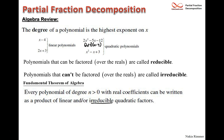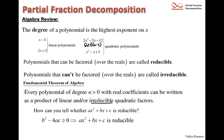The real question is: how do you know whether a quadratic polynomial is reducible or irreducible? For ax² + bx + c, the quadratic formula has b² - 4ac under the square root. When b² - 4ac ≥ 0 the quadratic is reducible, but when b² - 4ac < 0 the quadratic is irreducible because you'll have a negative number under the square root.